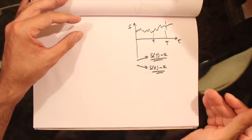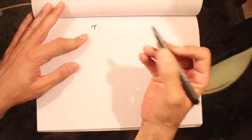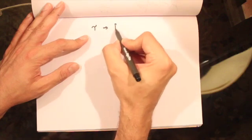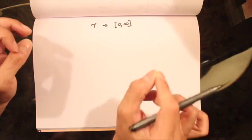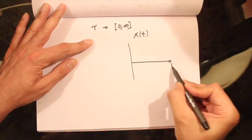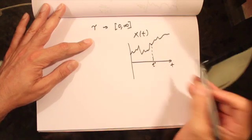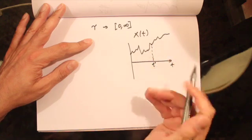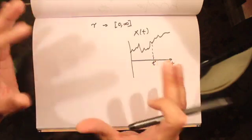Before we price American options, we need to understand a few important concepts. Let's first talk about stopping times. The stopping time is denoted by tau, and it is a random variable that takes a value in 0 to infinity. A stopping time is the time at which we stop a certain underlying stochastic process. If we have a stochastic process X(t) and we stop it at time t*, the decision to stop must be based only on information available to us at time t.